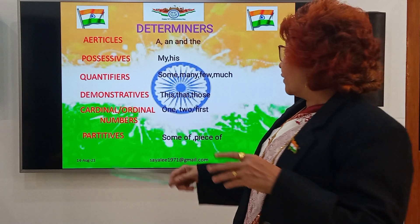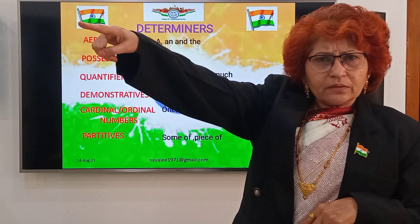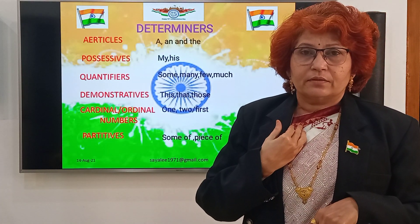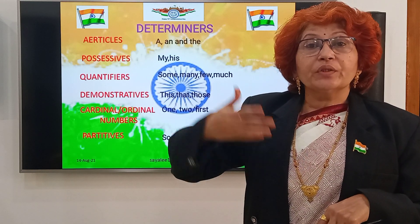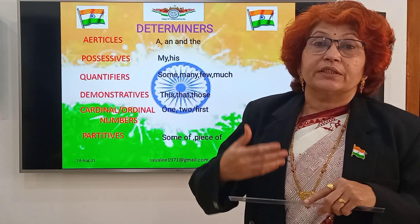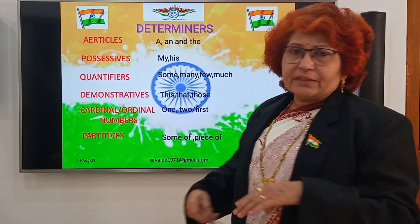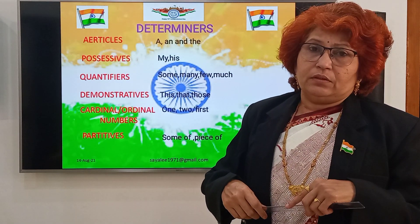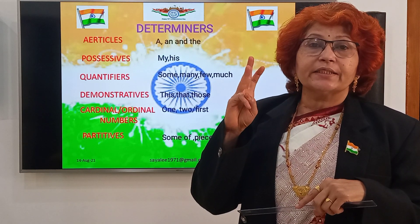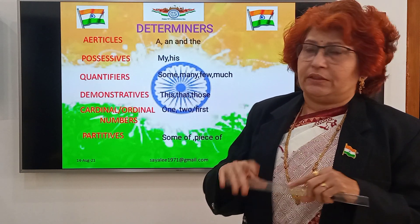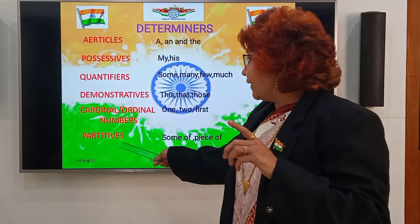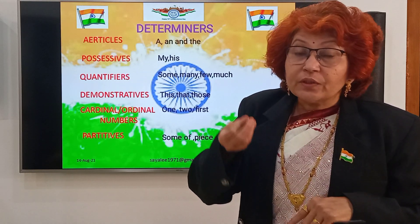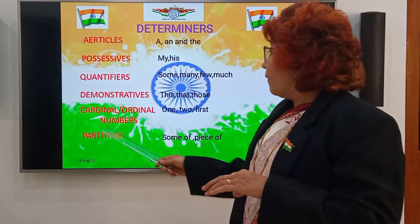The fourth type is demonstratives — for example, 'that is a tree', 'this is a teacher'. The demonstrative determiners are: this, that, those, these. The fifth type is numbers — cardinal numbers: 1, 2, 3, 4, 5, and ordinal numbers: 1st, 2nd, 3rd, 4th — both are determiners. The sixth type is partitives: 'sum of', 'piece of' — these are also determiners called partitives.